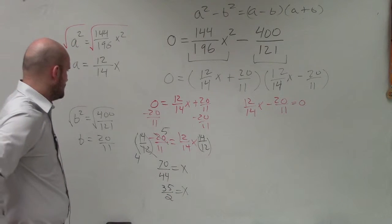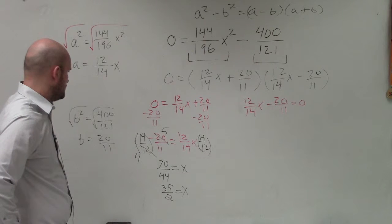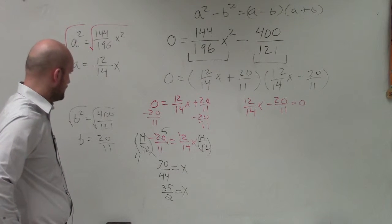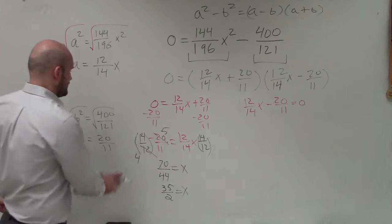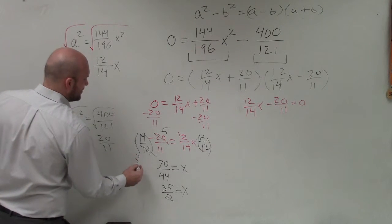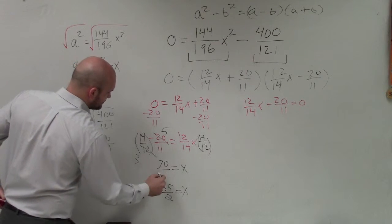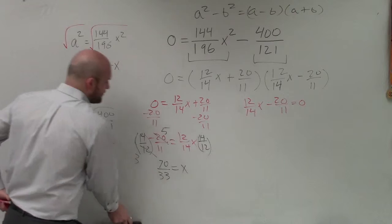OK. Yeah. 35 over 2 because of 4. Oh, no. That's 3. When you divide a 4 in there, that's going to be 3. So that's 33. I was going to say, you can't simplify that anymore. So therefore, that's going to be 70 over 33, which is going to be your final solution.